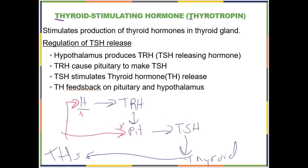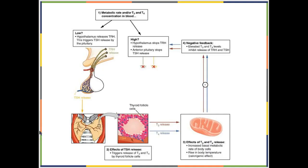To summarize: the hypothalamus releases thyrotropin-releasing hormone, which goes to the pituitary and causes the release of TSH. TSH travels everywhere; when it hits the thyroid, it stimulates the thyroid to produce thyroid hormones, which then negatively feed back onto both the pituitary and the hypothalamus. We are now out of the anterior pituitary and into our first peripheral endocrine organ: the thyroid gland.